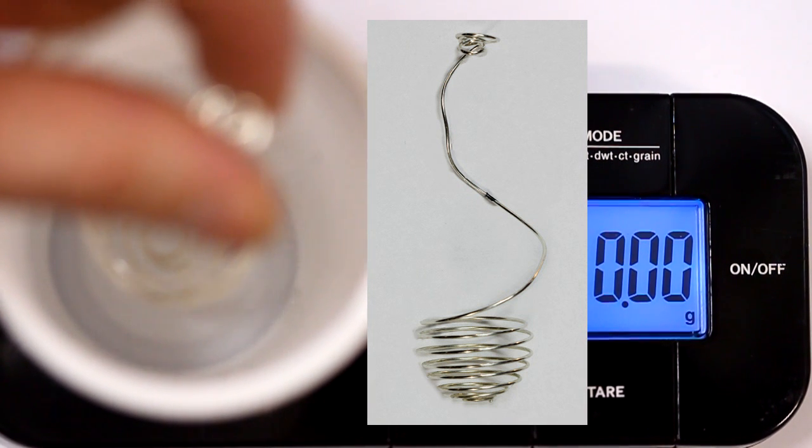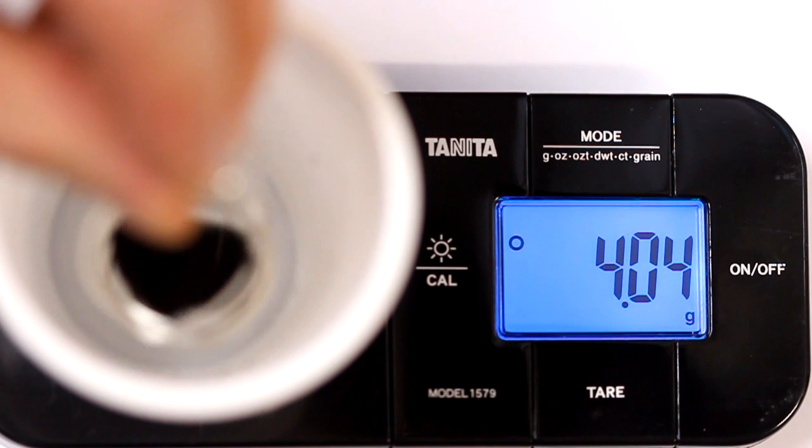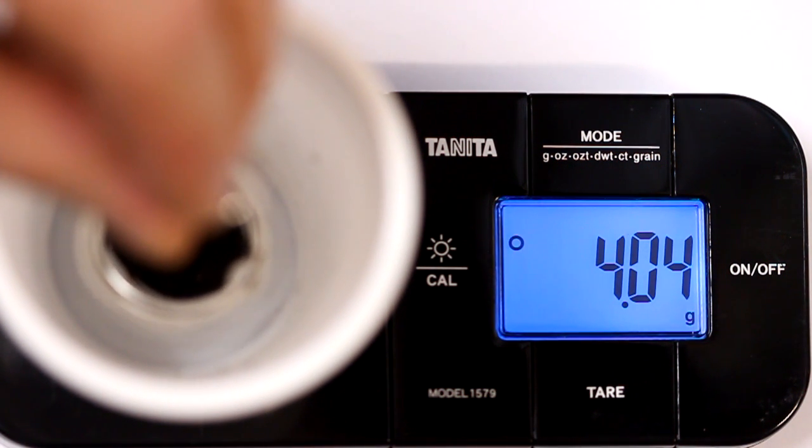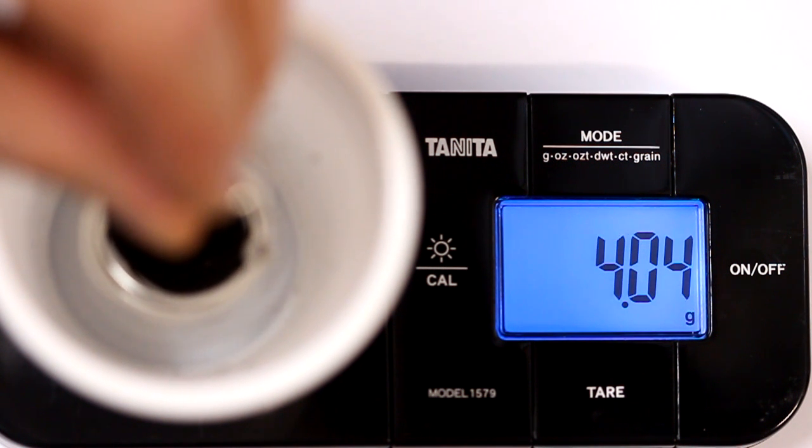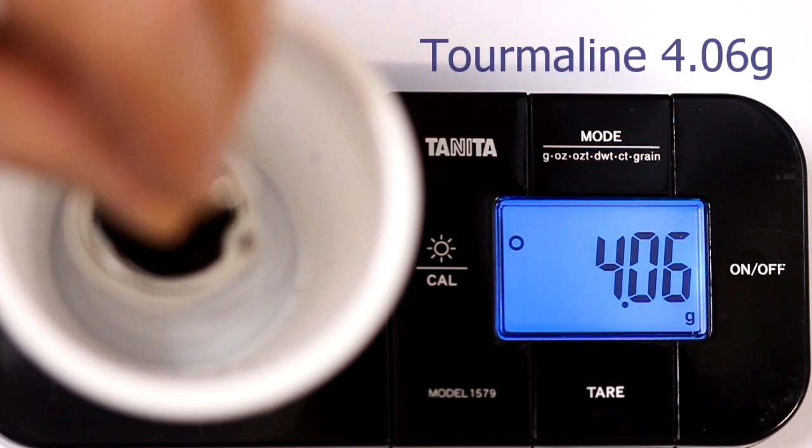And I've even put a little black mark there so I can immerse it at exactly the same point each time to make the test as accurate as possible. Make sure also that when you zero in the scales with the cage suspended in the water that when you place the stone in, don't let any water drip out because that will change the reading as well.